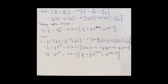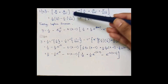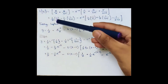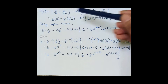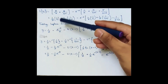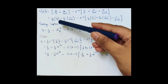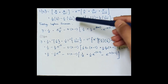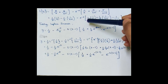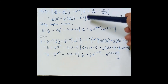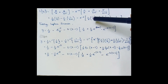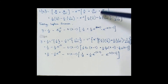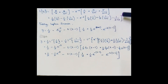Applying partial fractions and simplifying: L{y} = (1/2)·(1/s) − (1/2)·(1/(s+1)) + (1/(s+2)) minus e^(−s) times [1/2·(1/s) − (1/(s+1)) + 1/2·(1/(s+2))].